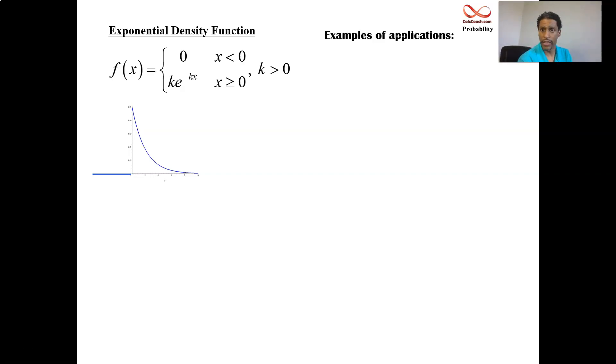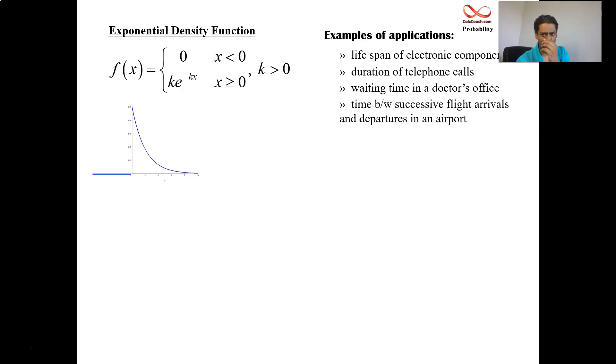This is used in real life in many different instances. Here are some examples: this is used when you're trying to figure out the lifespan of some electronic component or the duration of a battery or the duration of a telephone call, the waiting time for anything, waiting at a doctor's office. When you have flights that come into an airport, airports use this kind of a function to help us measure the probability or the likelihood that measures the time between successive flight arrivals and departures in an airport. And so this is an exponential density function. It is a special type of probability density function.